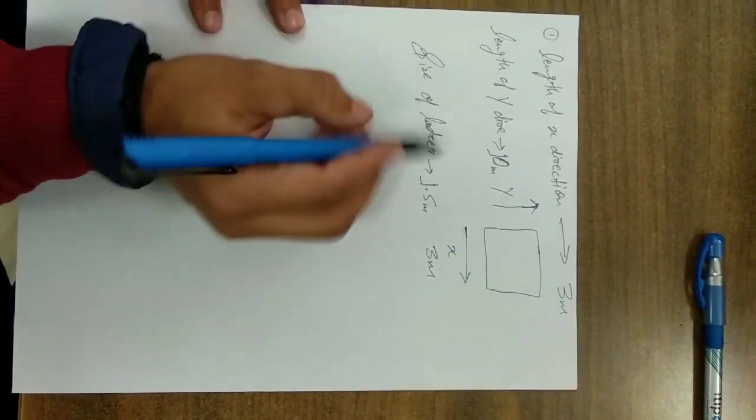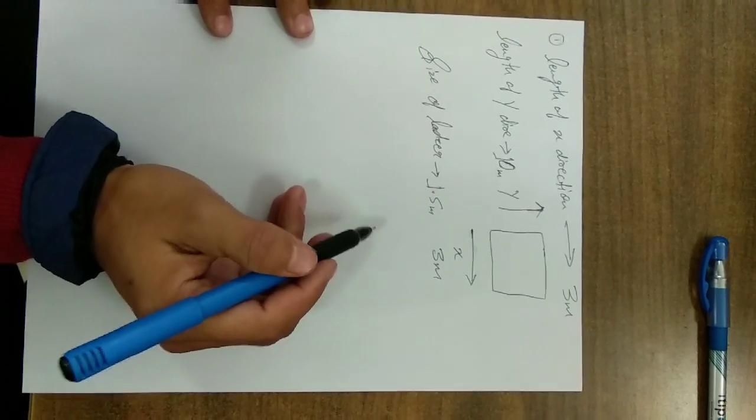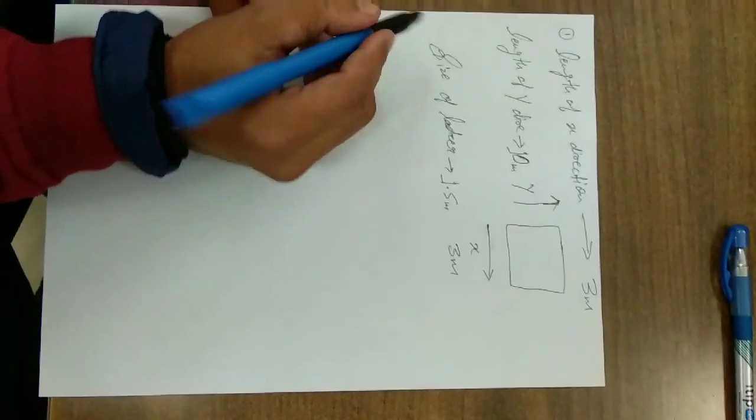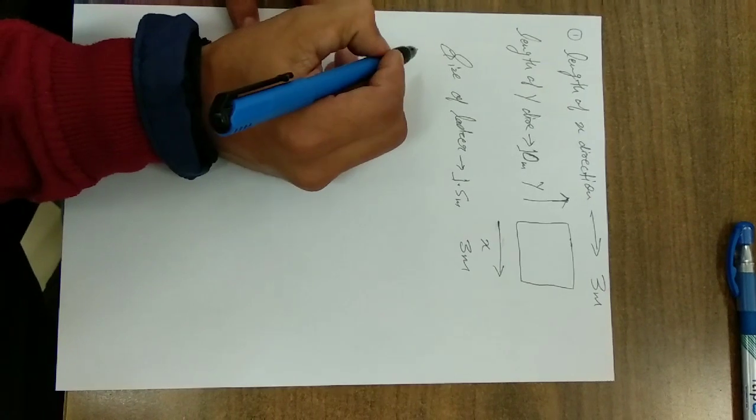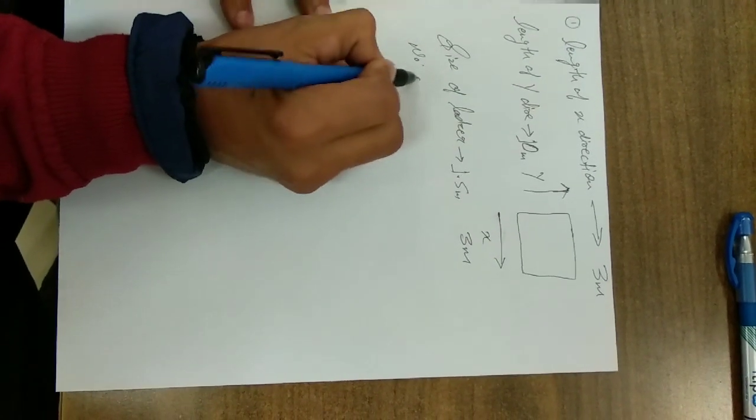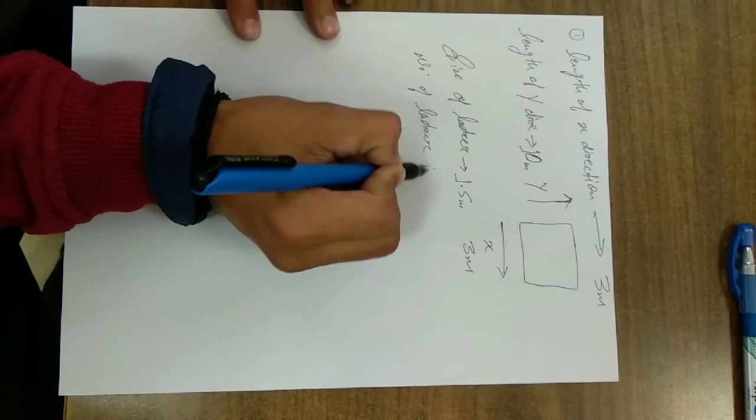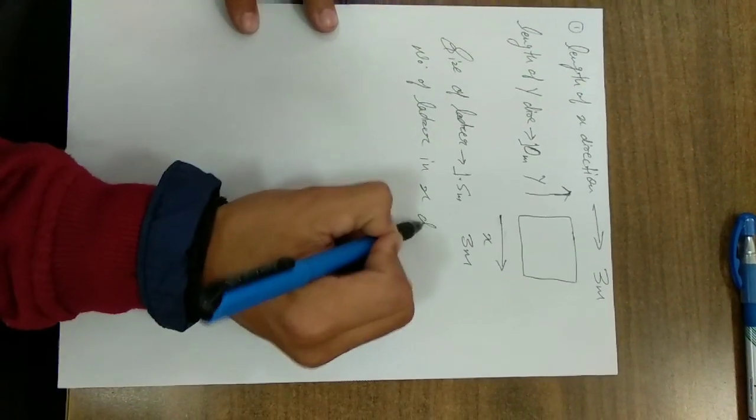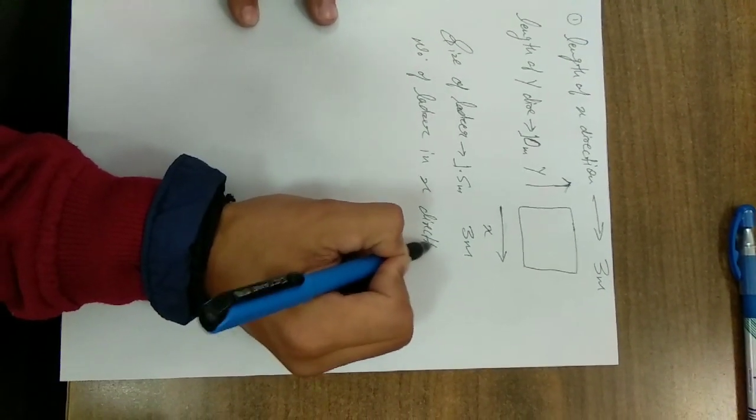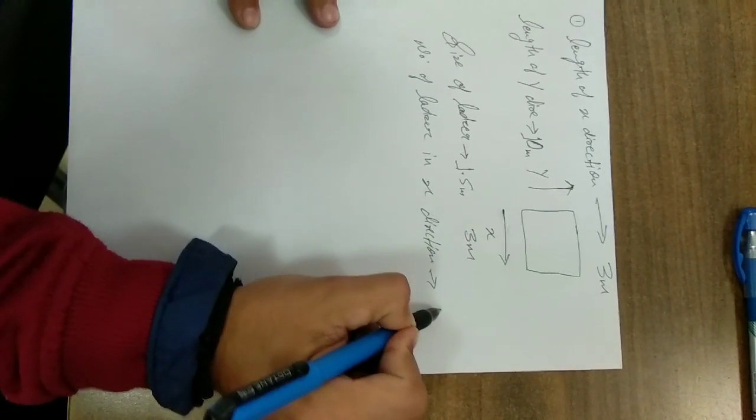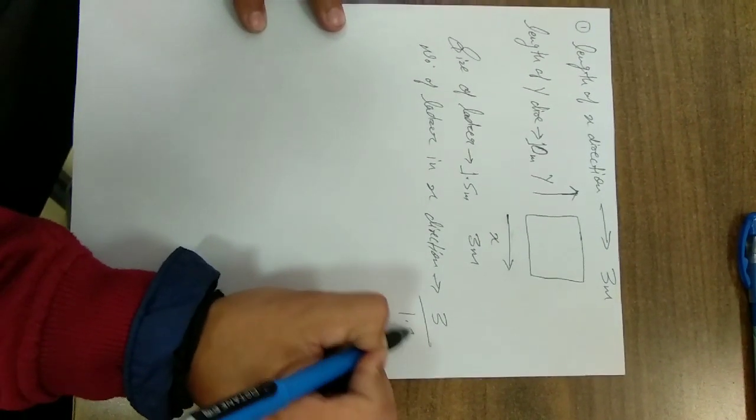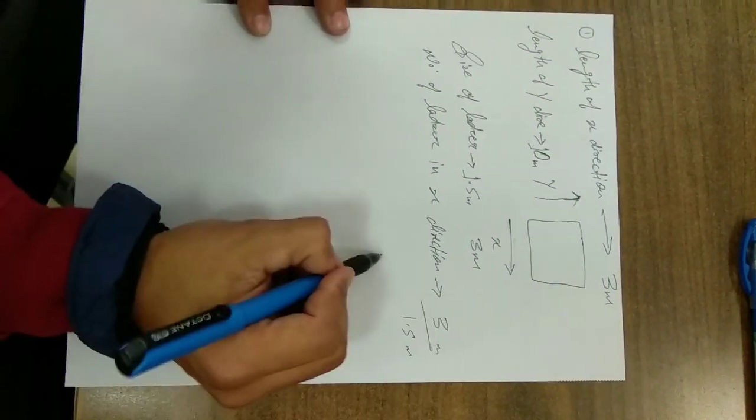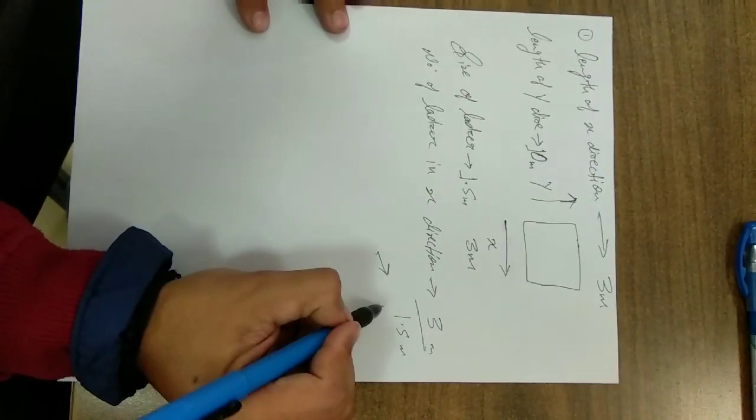For calculation of number of lasers in X direction, we have to divide 3 meter by 1.5 meter. So number of lasers in X direction is 3 meter divided by 1.5 meter, which equals 2 numbers.